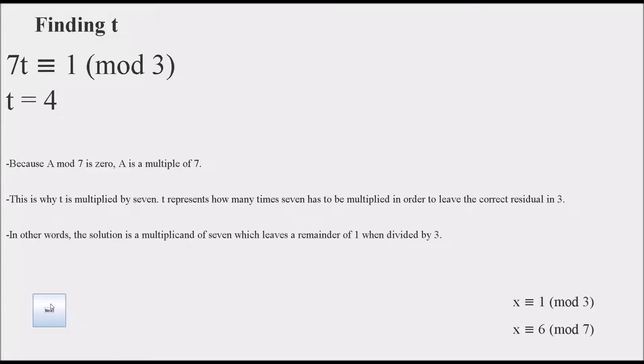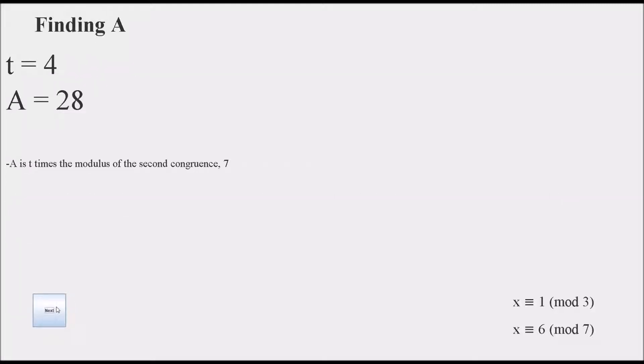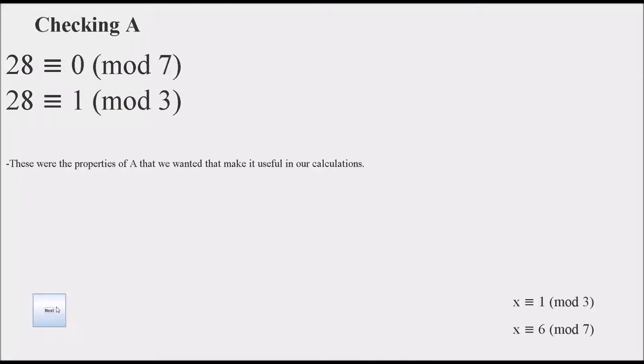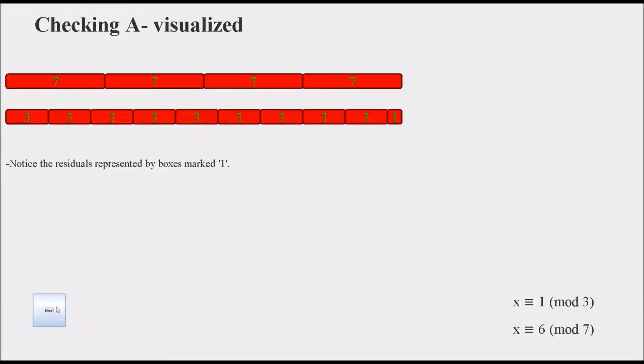Solving this congruence, we can see that t is 4 because 4 times 7 is 28, and 28 is congruent to 1 mod 3 and 0 mod 7. A therefore is 28. We can check A by plugging it back into the congruences that we set for it. So 28 is indeed congruent to 0 mod 7, and also congruent to 1 mod 3. We can see this visually as 4 blocks of 7, and a number of blocks of 3 with a 1 at the end. These two visualizations represent the same number, 28.